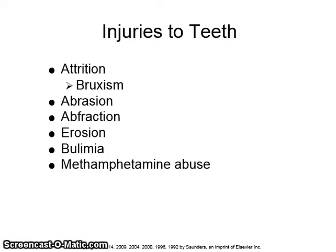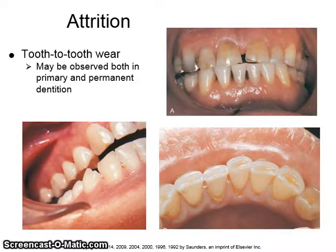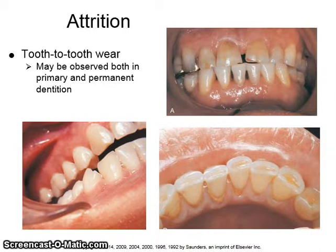Injuries to teeth include attrition, bruxism, abrasion, abfraction, erosion, bulimia, and methamphetamine abuse. Attrition is caused by tooth-to-tooth wear and may be observed both in primary and the permanent dentition. It is characterized by flattening of the occlusal cusps on molar teeth, causing wear facets. The wear matches the opposing teeth.